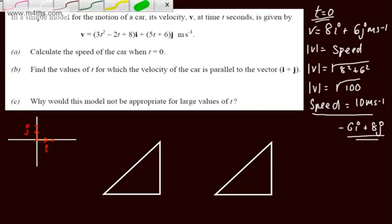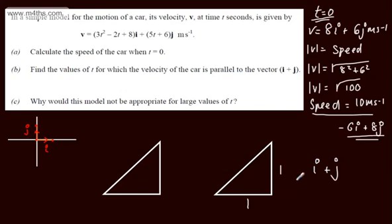I often work with these triangles. What I've got then is this vector right here. Now this is going to be i plus j. When I've got i plus j, we'll have something like that. We're going one across and one up.